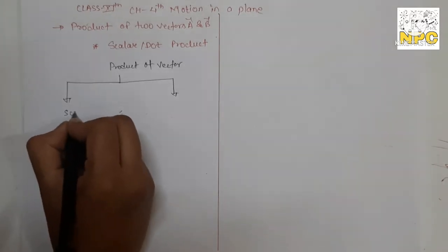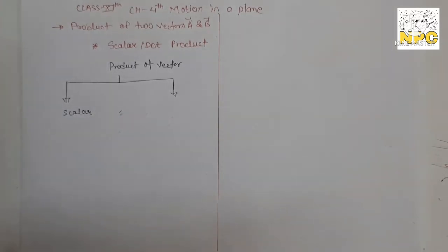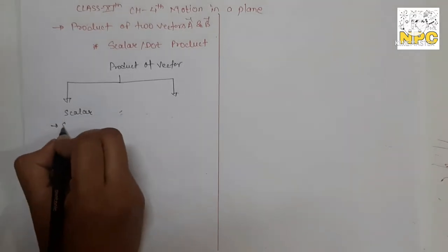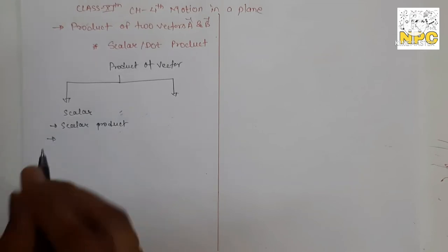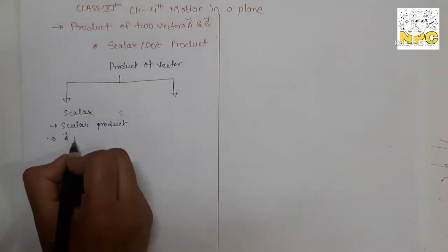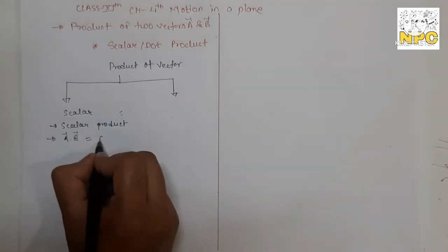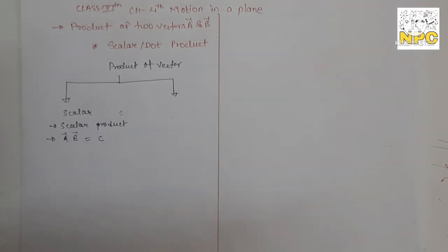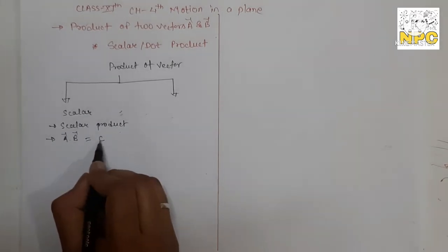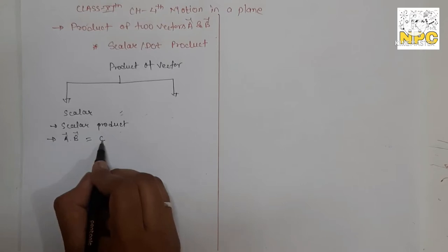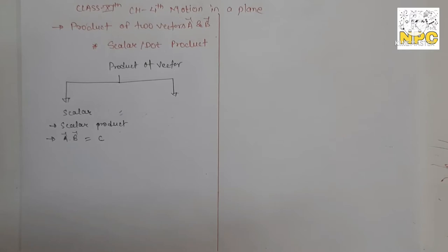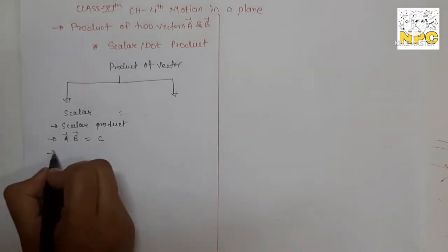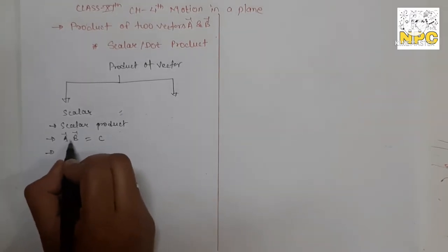First, we consider a scalar answer. If we consider two vectors a and b, then a dot b gives a scalar quantity — this means the product of two vectors results in a scalar. This is represented using the dot operator and is called the dot product.